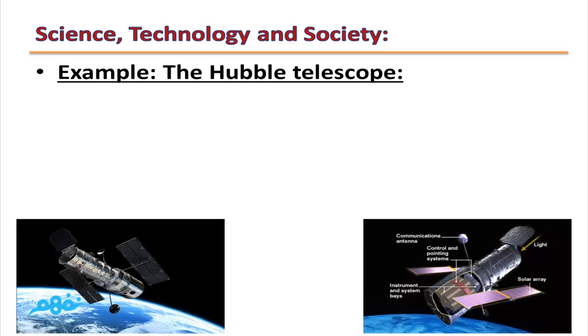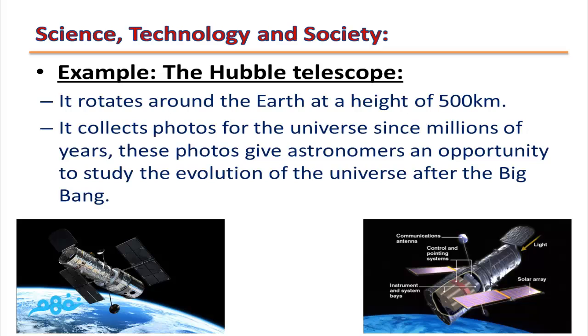Examples for telescopes: Hubble Telescope. It rotates around the Earth at a height of 500 kilometers. It collects photos for the universe since millions of years. These photos give astronomers an opportunity to study the evolution of the universe after the Big Bang.